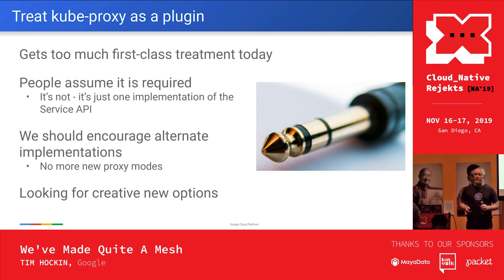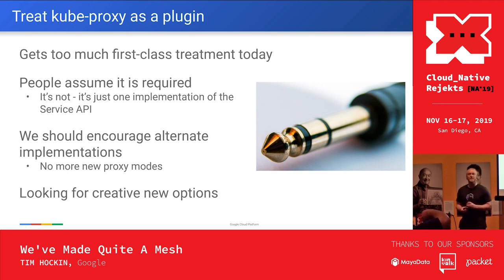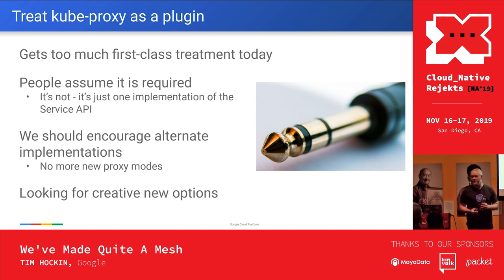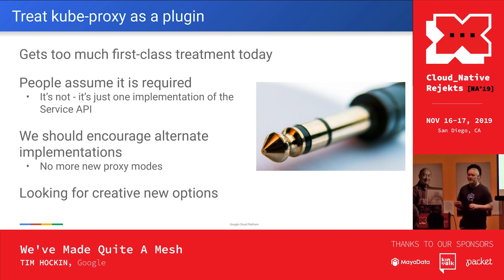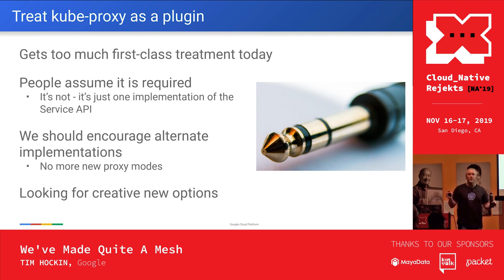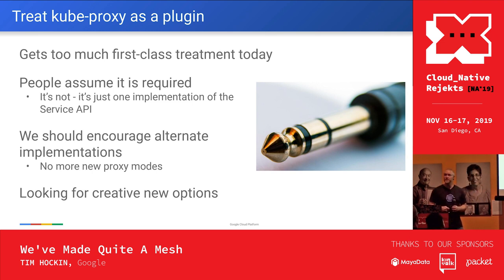Kube-proxy — this thing that has been part of Kubernetes since the very beginning, that implements services and that everybody assumes is required — it really isn't. It's actually an implementation of an API; it's as much a plug-in as anything else. We don't treat it that way for historical reasons, but I think we should lean into the idea that it's not privileged or special — it's effectively a first-party plug-in. We could, for example, run kube-proxy on a VM that isn't part of your Kubernetes cluster to enable that VM to be part of your Kubernetes mesh. It effectively is a sidecar.